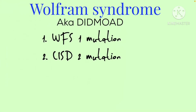Typically the first presentation is diabetes mellitus. This usually has a poor prognosis. Following that, there will be visual field problems resulting in visual acuity less than 6/60.